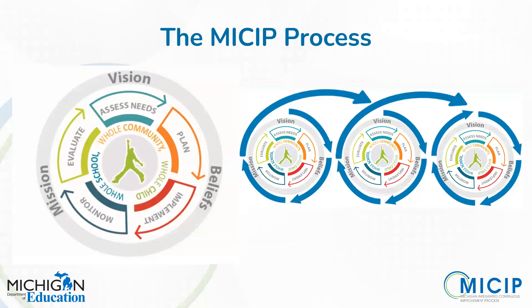This is probably a graphic that looks familiar to most of you. On the left side we see the MICIP cycle, characterized by five components — sometimes referred to as sub-processes — focused on the whole school, the whole community, and whole child, contextualized within the district vision, mission, and beliefs. In actuality, implementation is not just one cycle; it's really represented by the graphic on the right side, where we have a series of repeated cycles where data from the monitor and adjust processes from one implementation cycle then informs the next cycle, and so on.